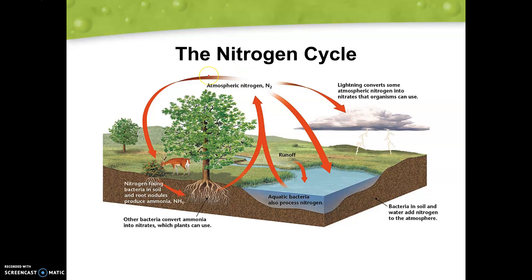We see a lot of atmospheric nitrogen. What is going to take that nitrogen out of the sky can either be nitrogen fixing bacteria, which brings nitrogen into the soil and roots in a usable form for plants, and then animals will get it by eating those plants. We can also see lightning converting some of that nitrogen into nitrates that organisms can use. Bacteria in the soil and water will also take nitrogen and process it back into a form that returns it to the atmosphere.